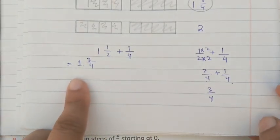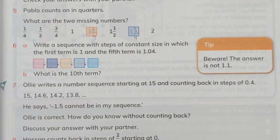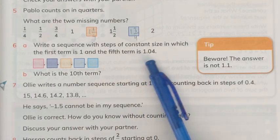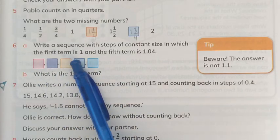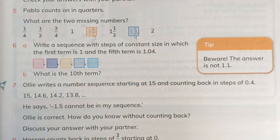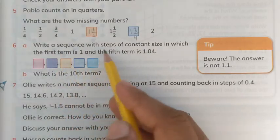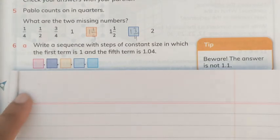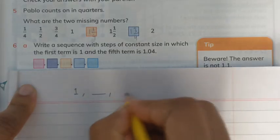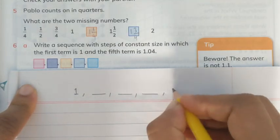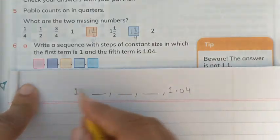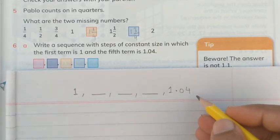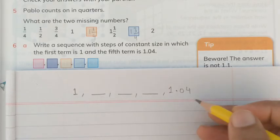Now Question 6 says: write a sequence with steps of constant size in which the first term is 1 and the fifth term is 1.04. We need to find the three middle terms. The difference between all terms must be constant. The total difference is 1.04 minus 1 = 0.04, spread over 4 intervals.